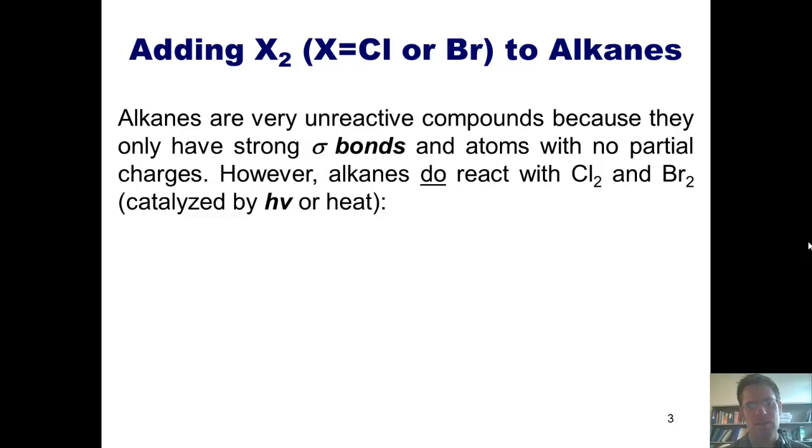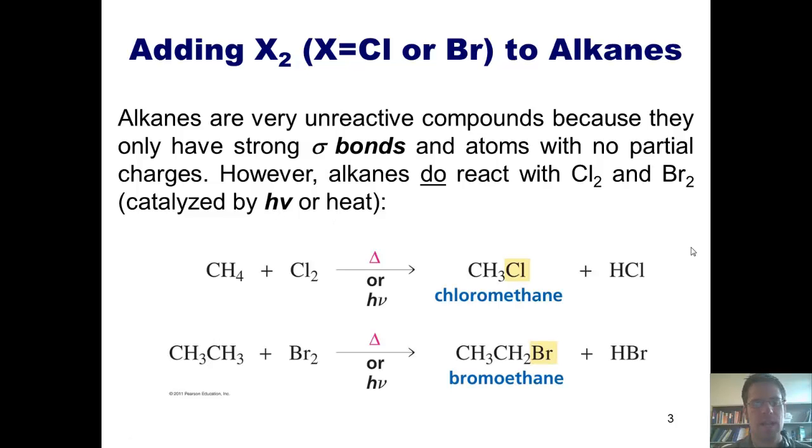However, one reaction that they can do is they can react with chlorine, Cl2, or bromine, Br2, in circumstances when they're catalyzed by light, which is abbreviated hν. This is actually supposed to be the Greek letter nu, and the only font type that I have allows me to put the letter V in here in italics, as seen here. I can take, for example, methane, which under normal circumstances doesn't undergo organic reactions very easily, and treat it with chlorine gas, light or heat, and replace one of the hydrogen atoms with a chlorine atom. Similarly, I can take ethane gas and treat it with bromine and light or heat, and replace one of the hydrogens with a bromine.